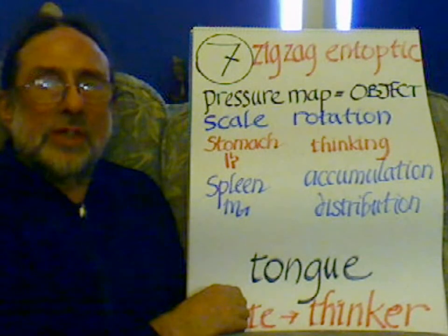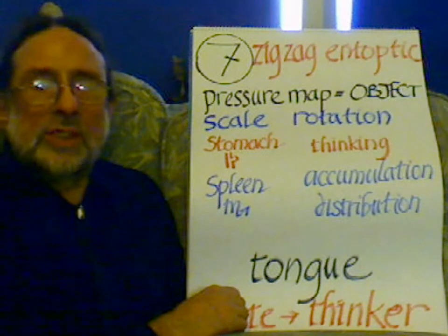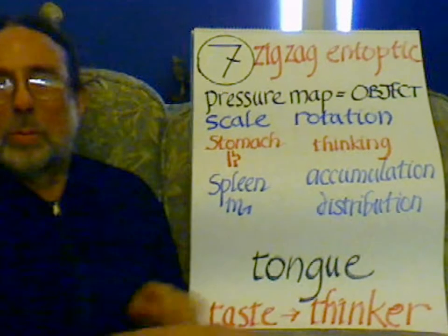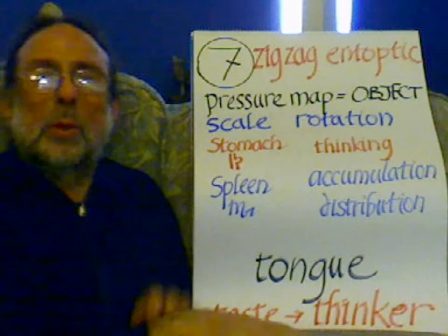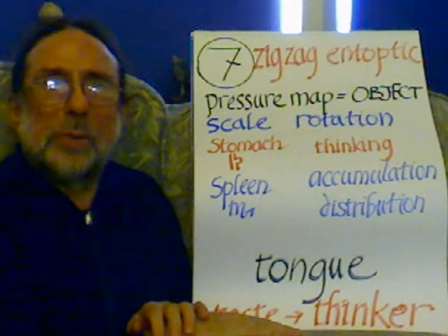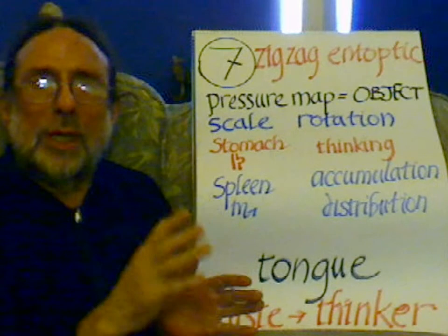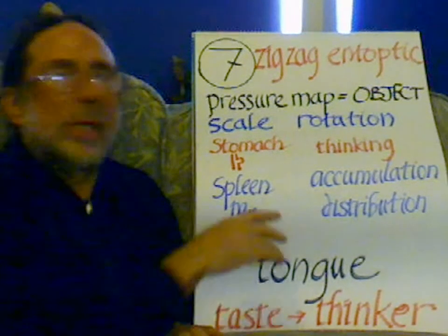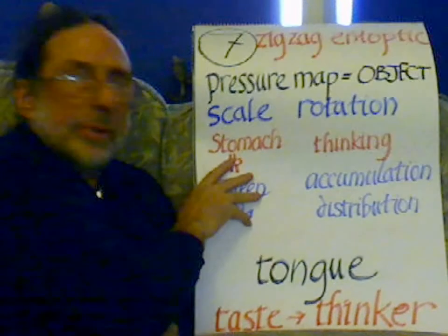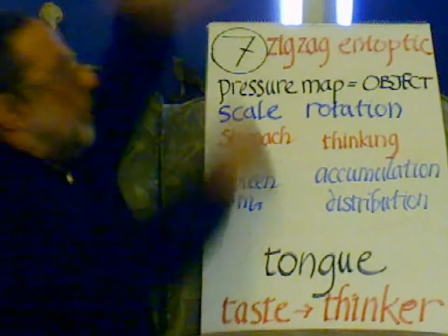From number 6 — the pressure wave — we encounter fixed pressure situations, and those are what we call objects, or they become objectivized: those enduring pressure maps. So from feeling, we get a pressure map; if that pressure map endures, we get an object. And this is what the 7 represents — basically the corners of an object.